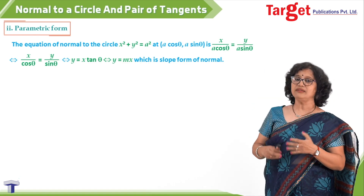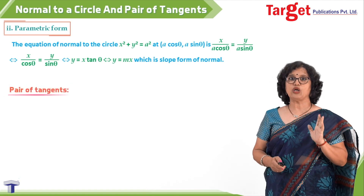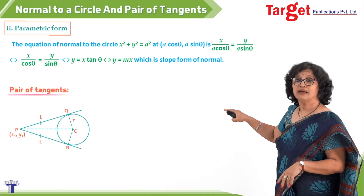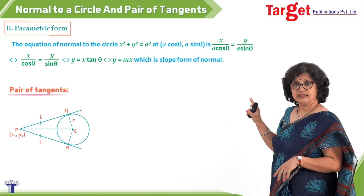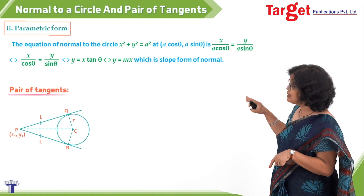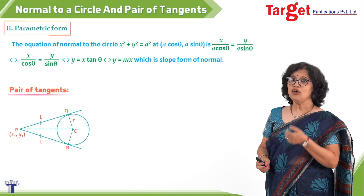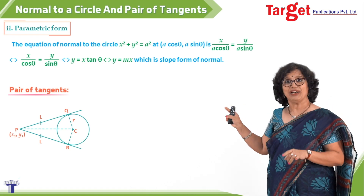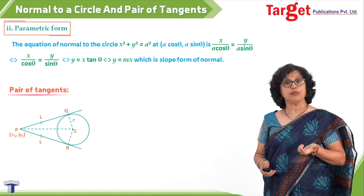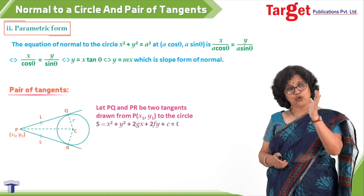Now, talking about pair of tangents — the moment I say pair of tangents, you are expecting two tangents. Taking a point P(x1, y1), I draw two tangents PQ and PR to the circle. From geometry, through a point outside the circle, if you draw two tangents, the lengths of the tangents are equal, so PQ = PR. These are called the length of the tangent.